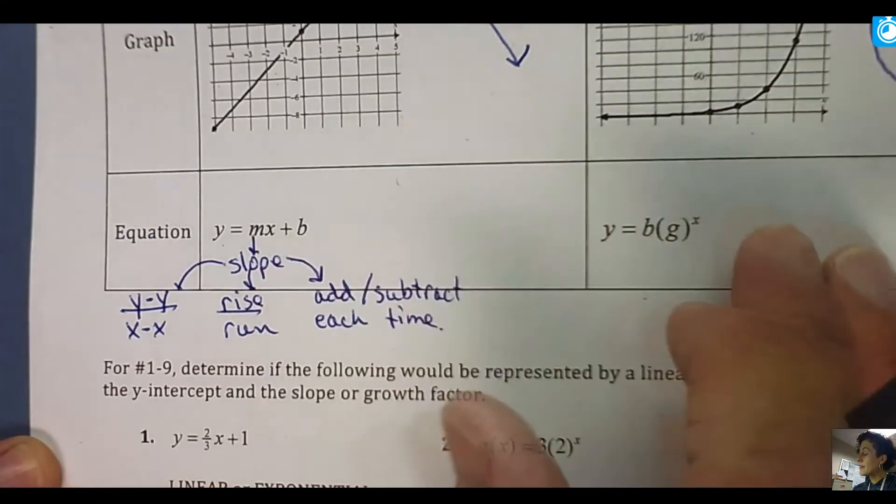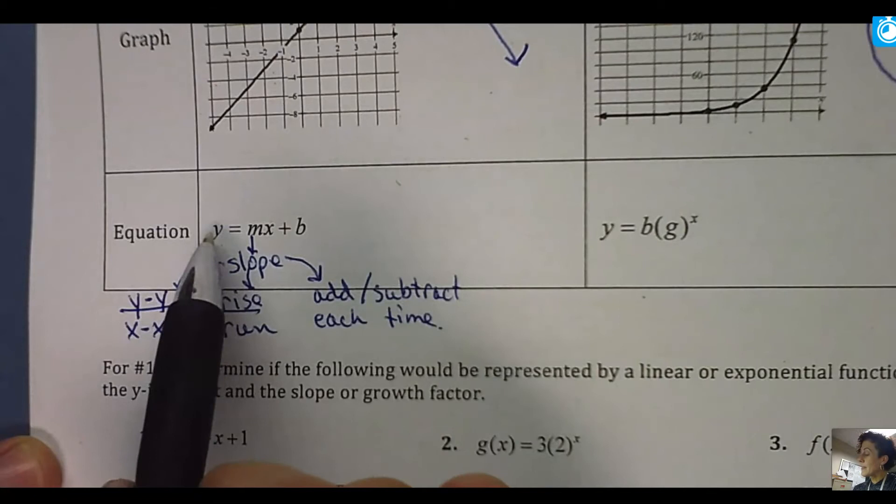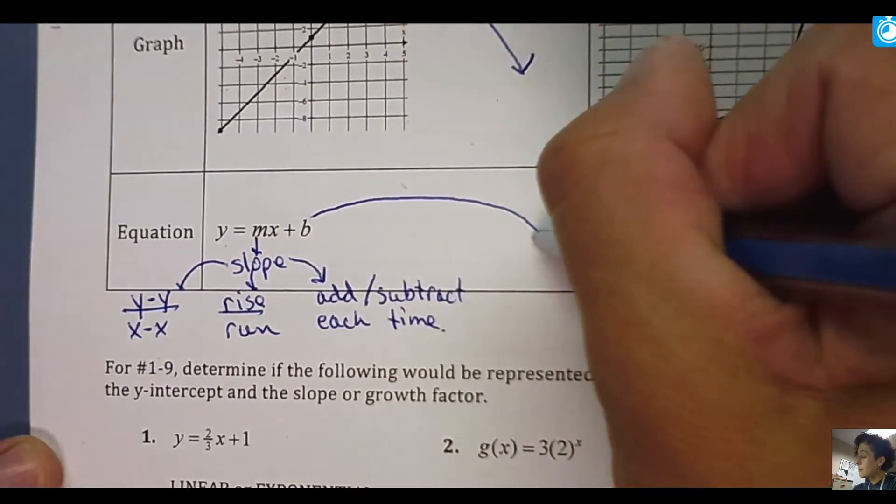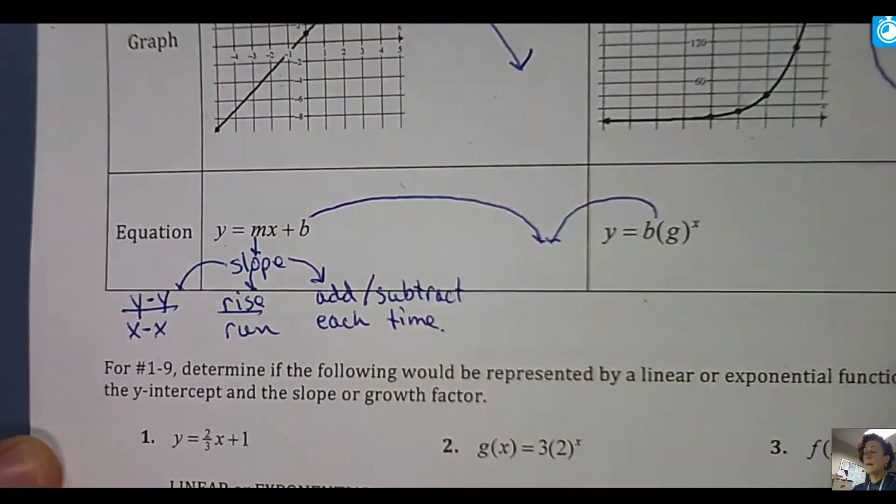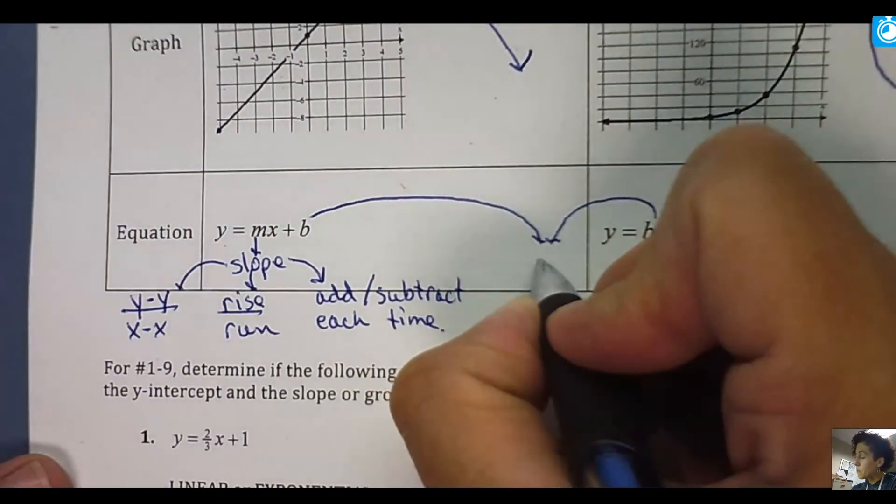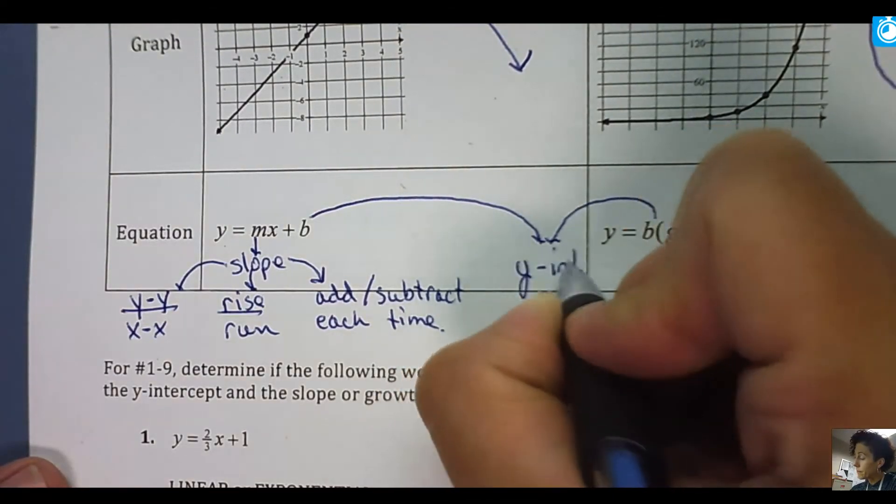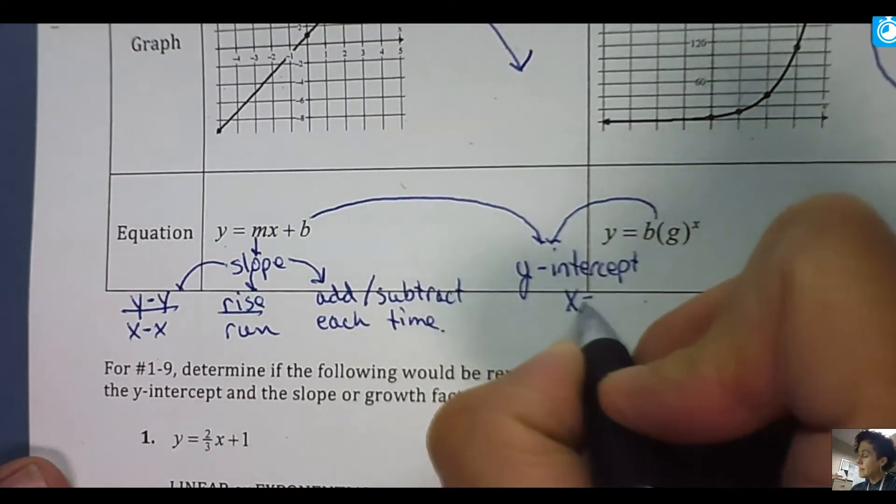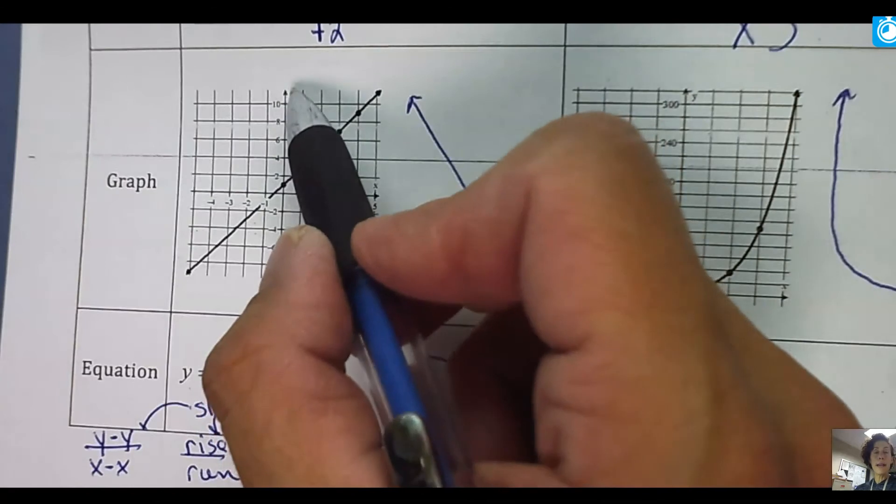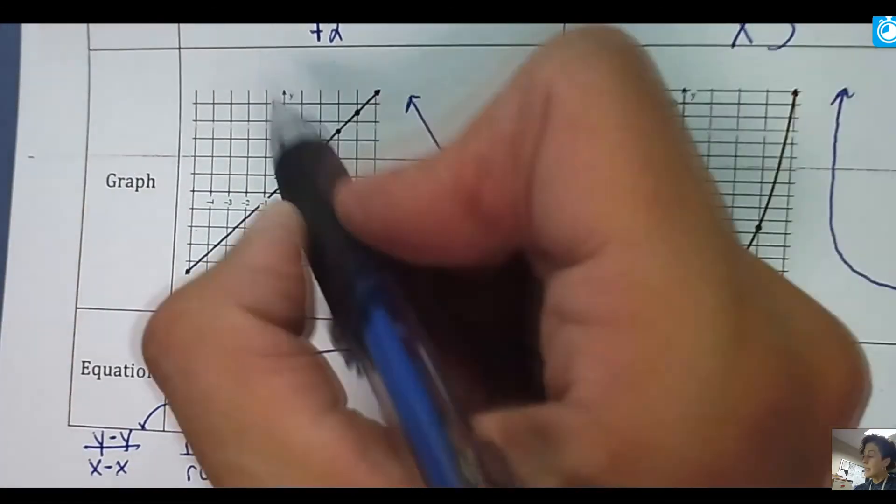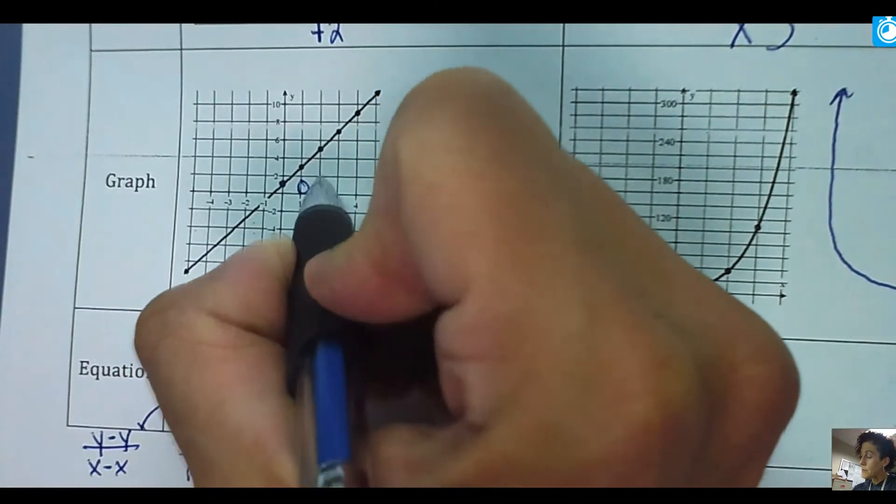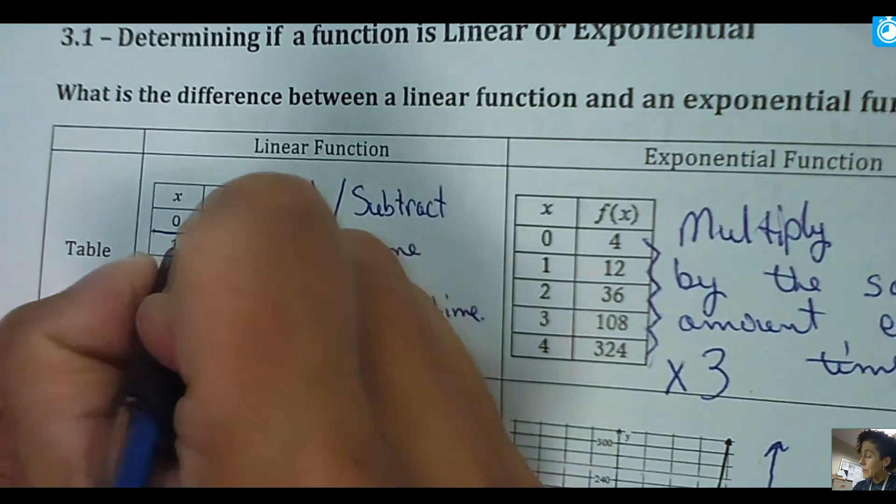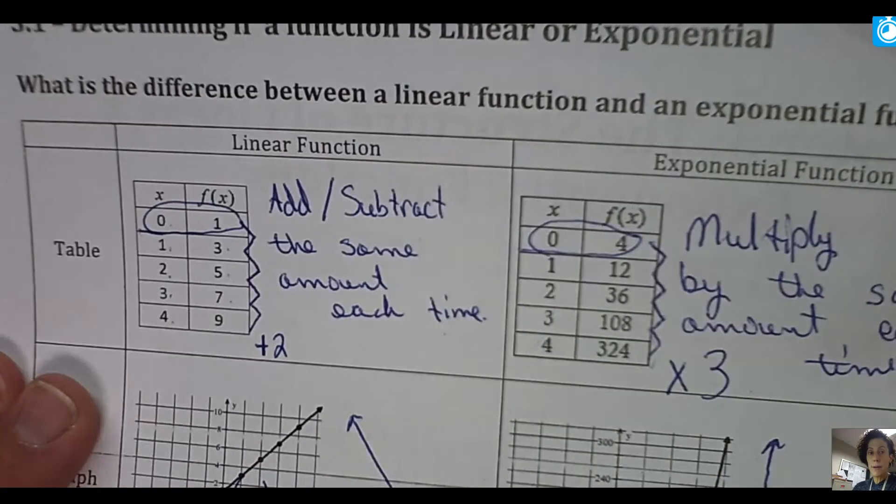So when I start comparing these two, what I do notice is besides the fact that they both have Y equals, they both also have this B. And this B, whether it's in this function or this function, means the same thing. So B is known as your Y intercept. And in all Y intercepts, X is 0. Because if I go here, it's called the Y intercept because that's where this shape intercepts the Y axis. So 0, 1. And if I go to my tables, I know it's the Y intercept because the X value is always 0. This one's a little tough to tell in the picture.